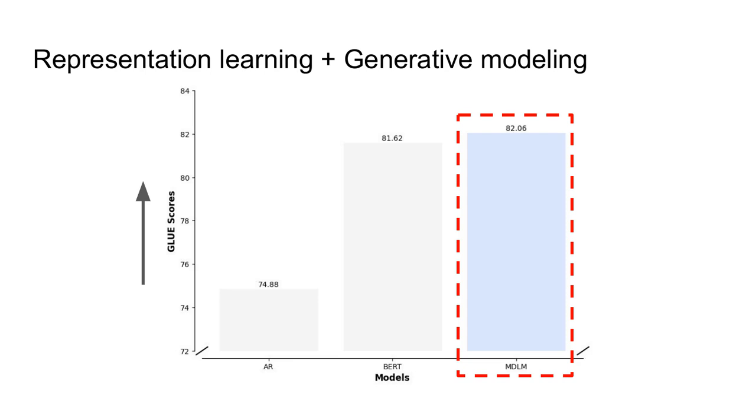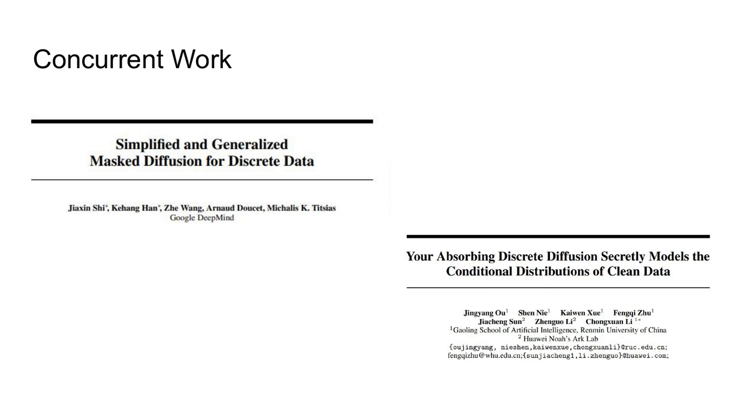The paper also includes additional experiments looking at the generative process, as well as approaches to semi-autoregressive generation. One neat thing to note as well is that when we put this paper out, two other concurrent works also came up with very similar formulas and similar positive results for text diffusion.